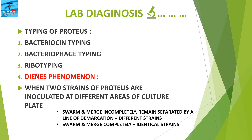Typing of Proteus includes bacteriocin typing, bacteriophage typing, ribotyping, and the Dienes phenomenon. The Dienes phenomenon is most important: when two different strains of Proteus are inoculated at different areas of a culture plate, they merge incompletely and remain separated by a line of demarcation. In the case of identical strains, they swarm and merge completely.